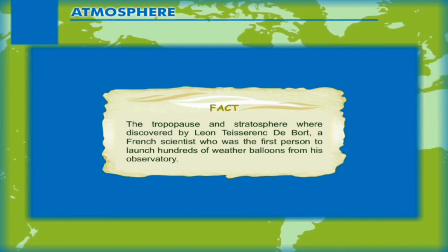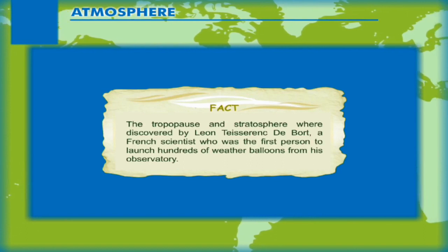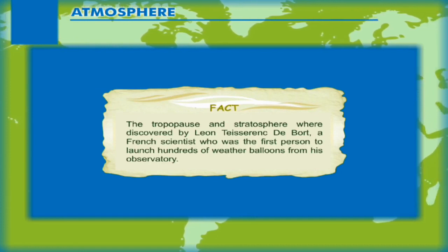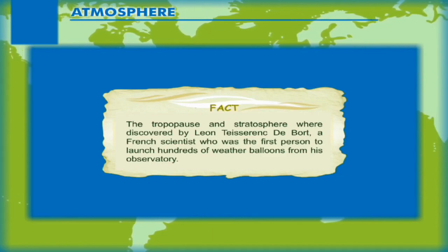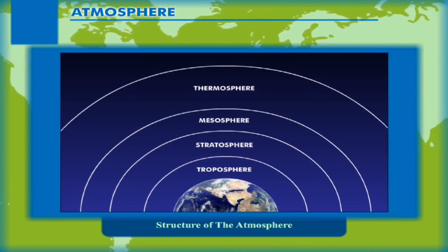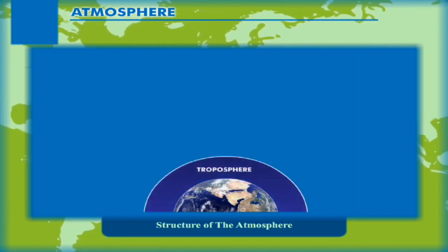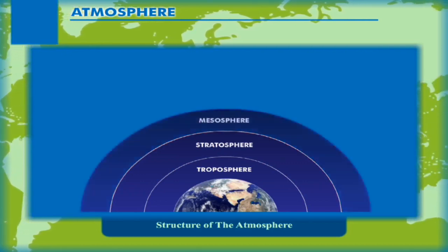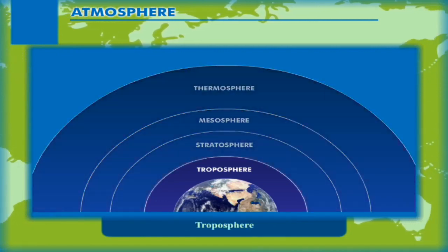Fact: The troposphere and stratosphere were discovered by Leon Teisserenc de Bort, a French scientist who was the first person to launch hundreds of weather balloons from his observatory. Structure of the atmosphere: The atmosphere can be divided into four distinct layers: A. Troposphere, B. Stratosphere, C. Mesosphere, and D. Thermosphere.